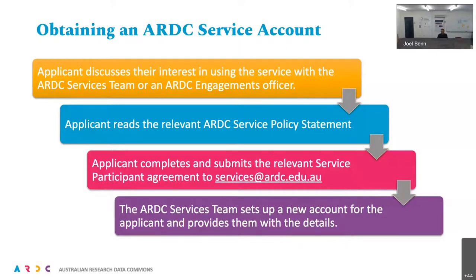In terms of obtaining a service account, here's the general procedure for a production account. If you're just looking to use the test service, contact any ARDC contact or email the services desk and we can set you up a test account pretty easily. For a production account, the applicant discusses their interest in using the service with a contact at ARDC — whether the services team, an engagements officer, or your project contact. There's a service policy statement for each service outlining what you can expect from ARDC and what our expectations are of you. Then there's a participation agreement to sign and send to the services team, who'll set up your account and send you documentation details.